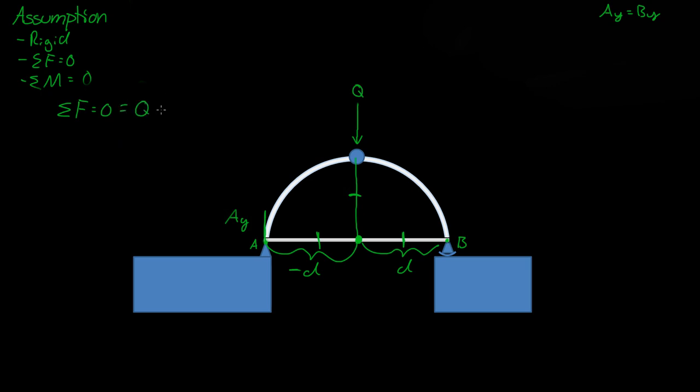So Q plus A plus B must equal zero. Q is going down, so it's actually negative. So then if we put that over there, we could actually just get Q is equal to A plus B.